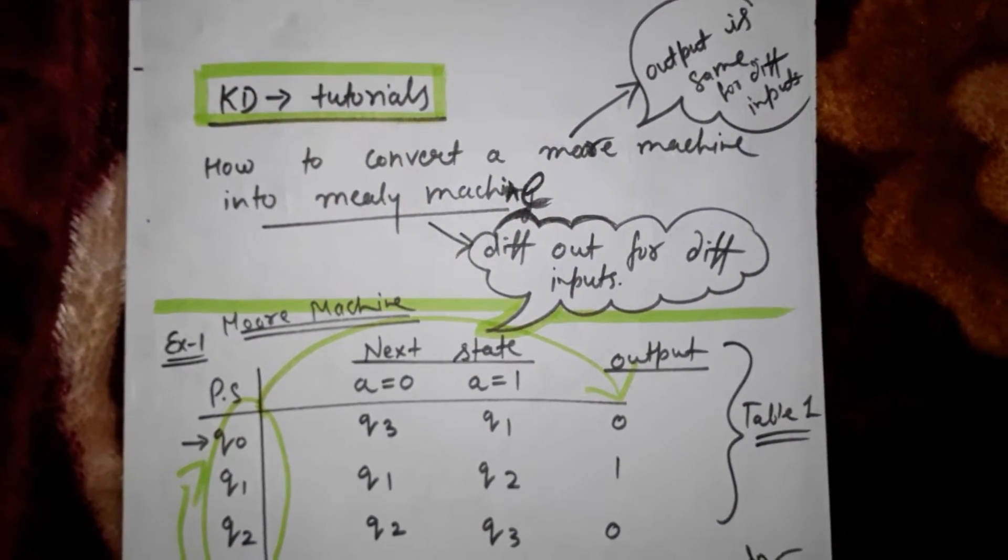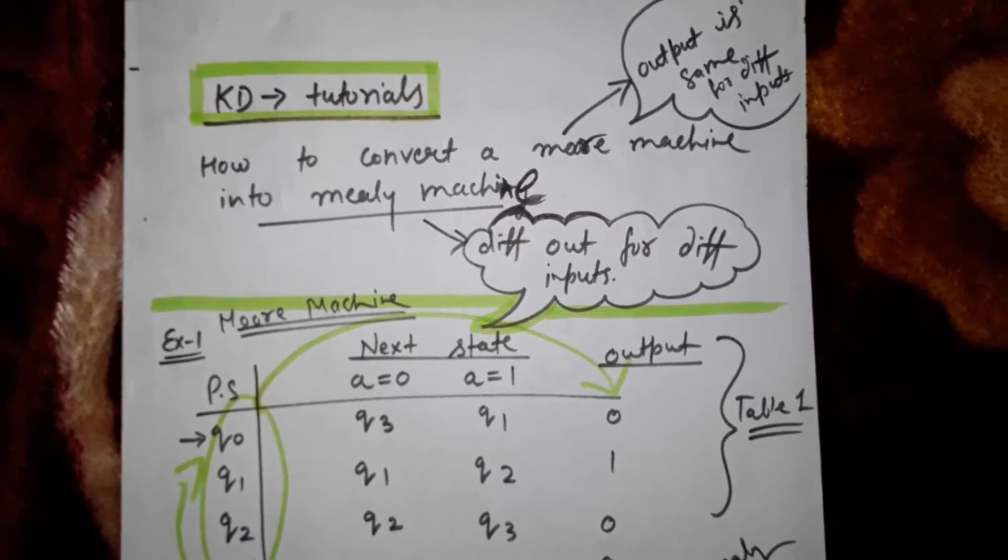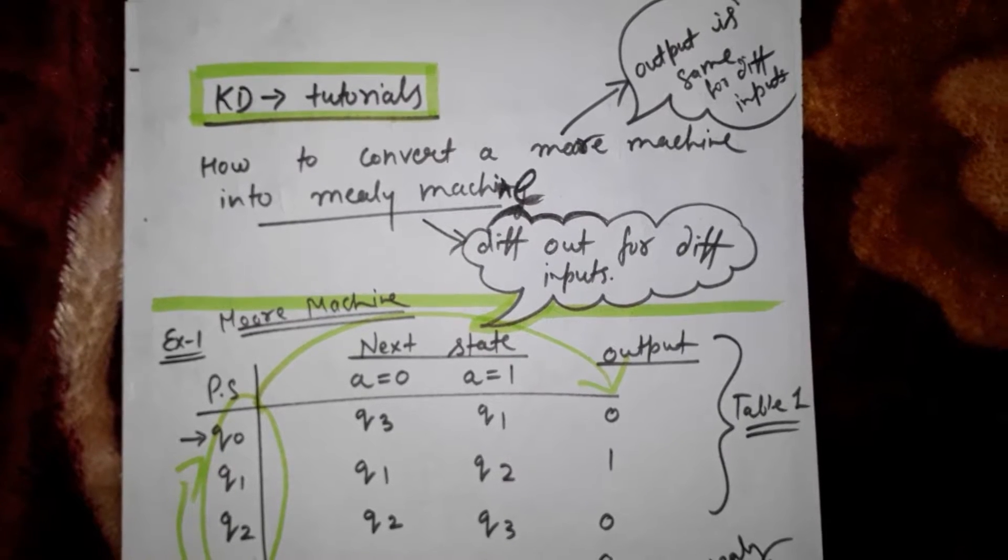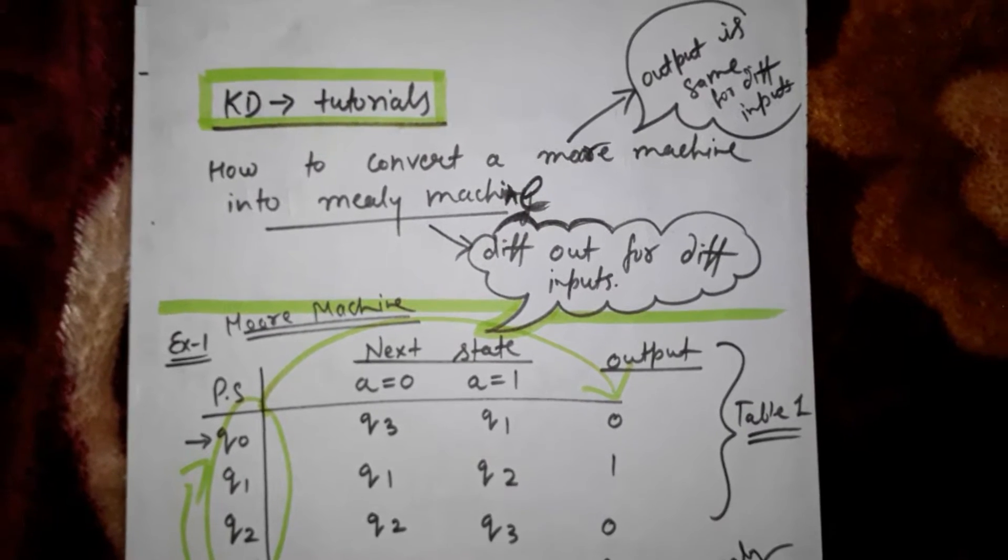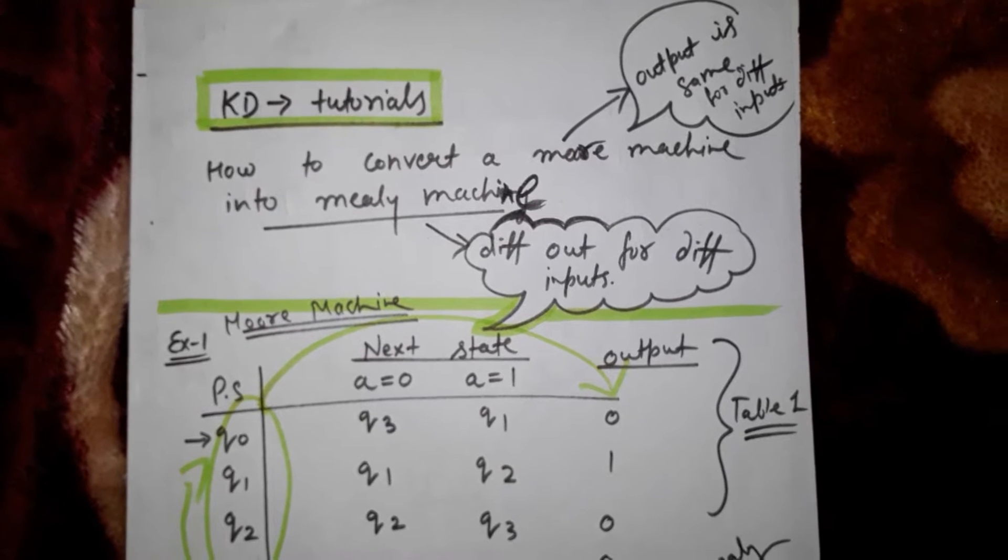Hello everyone, today we are going to learn how to convert a Moore machine into a Mealy machine. The only difference between a Moore machine and a Mealy machine is that for each input in a Moore machine, the output